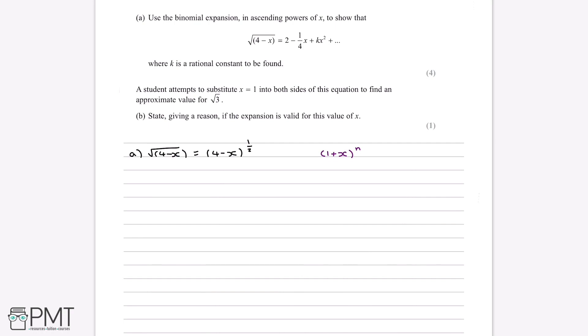And so to get rid of this, what we can do is we can take it out of the bracket as long as we keep the power on it. So if we keep it as 4 to the power of a half, then we can take it out of the bracket and we're left with 1 minus a quarter x because we also have to divide the minus x by 4, all still to the power of a half.